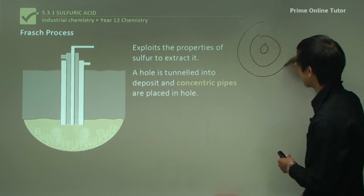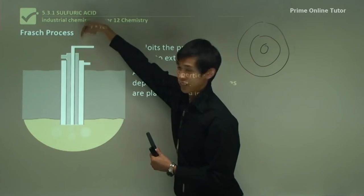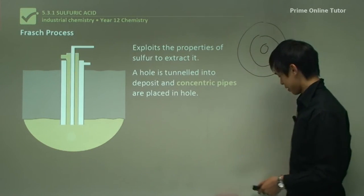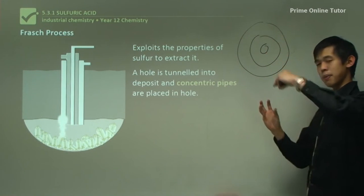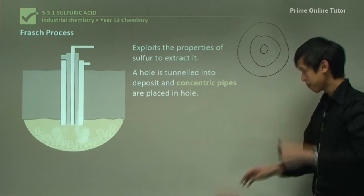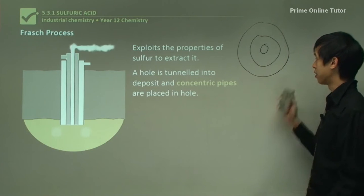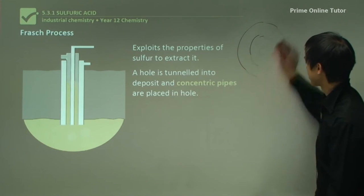Looking at it from above, you can see three concentric pipes — circles within circles — one inside the other. We place those three pipes down into the hole that we just dug into the sulfur deposit.